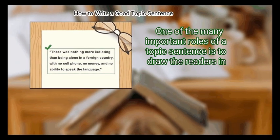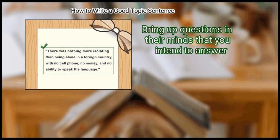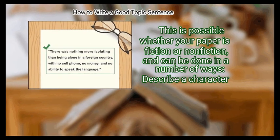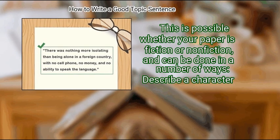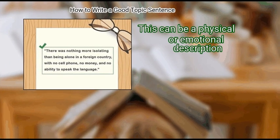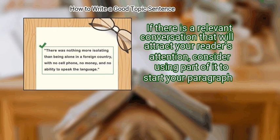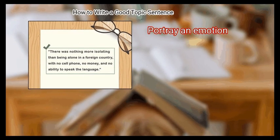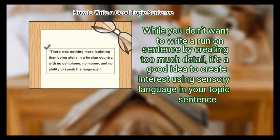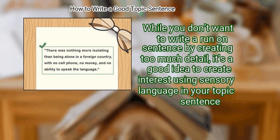Step 3: Hook your reader. One of the many important roles of a topic sentence is to draw the readers in and bring up questions in their minds that you intend to answer. An effective way to do this is to drop them straight into the action. You can describe a character — either a physical or emotional description. You can use dialogue if there is a relevant conversation. You can portray an emotion, or use sensory language to create interest through detail.